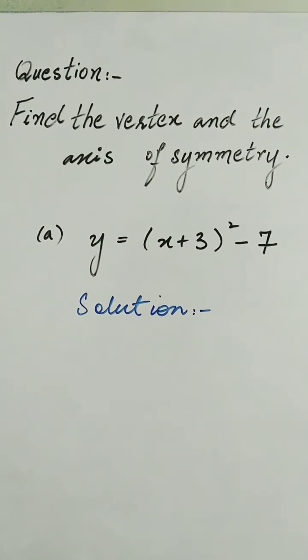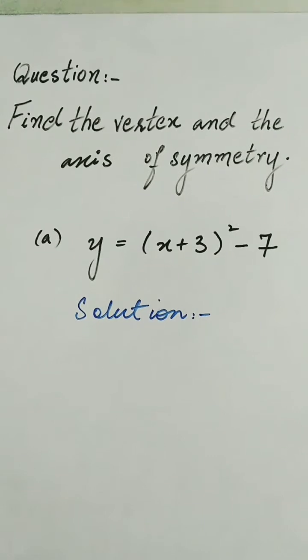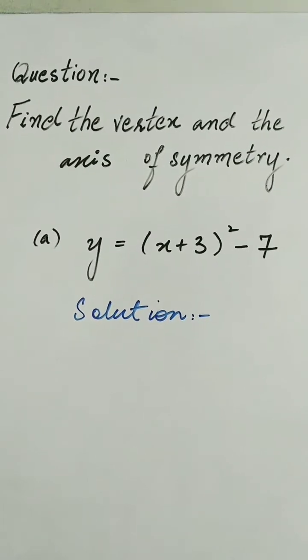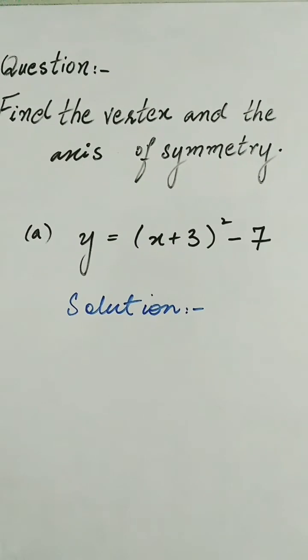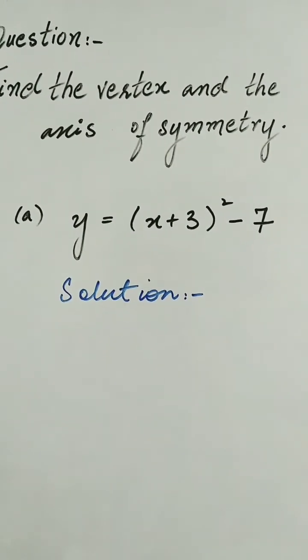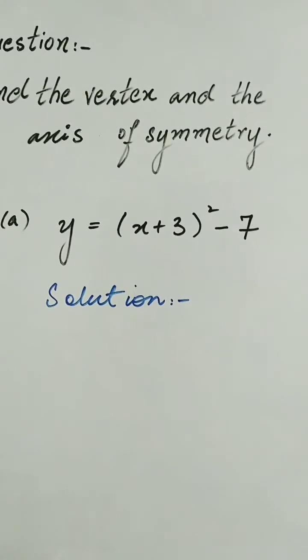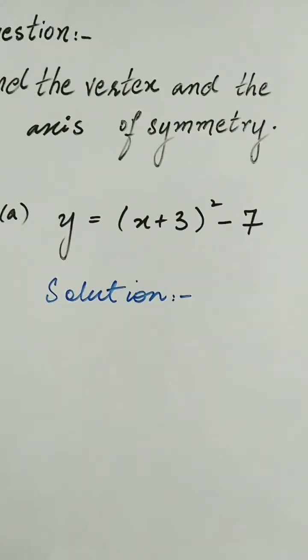Here we have a question in which we have to find the vertex and the axis of symmetry. The question given is y = (x + 3)² - 7.